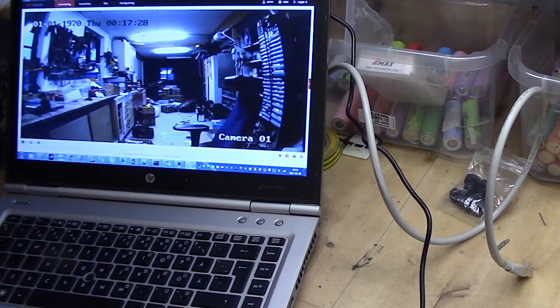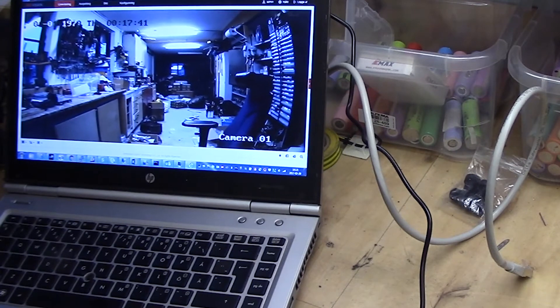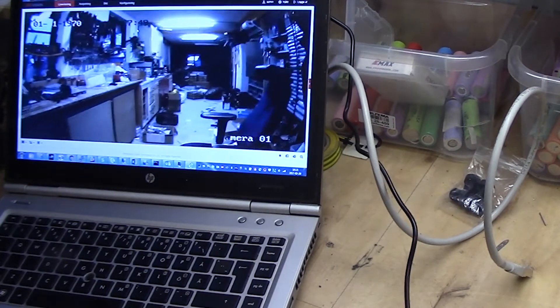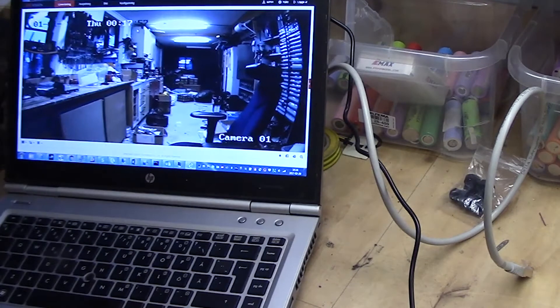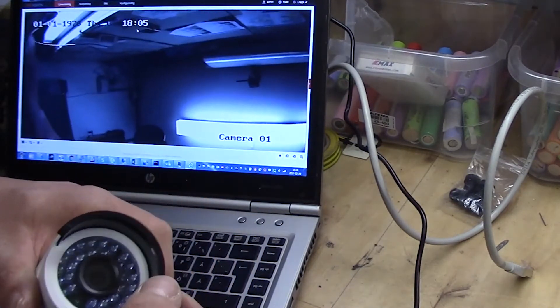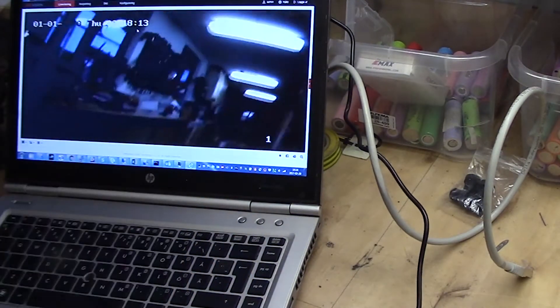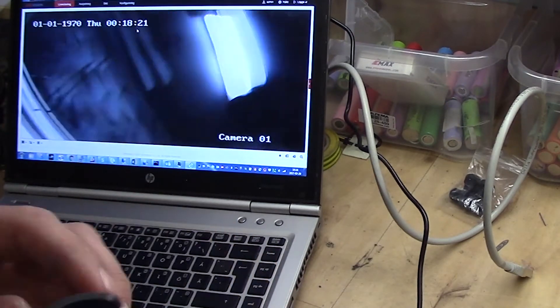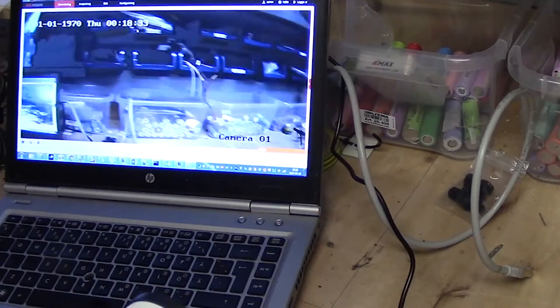You will see on the edges there is some blackness, and that is because we are going with a wider lens than we had before. So it is actually showing the rubber edge on the camera. You could most likely cut that away, but I don't bother because it is so little on the edges or in the corners.